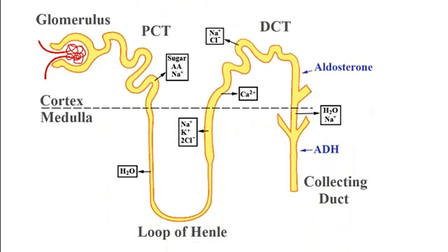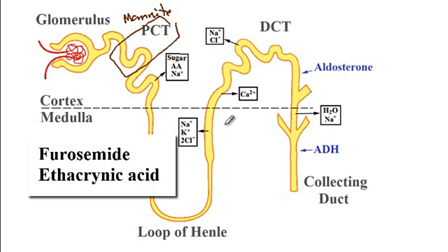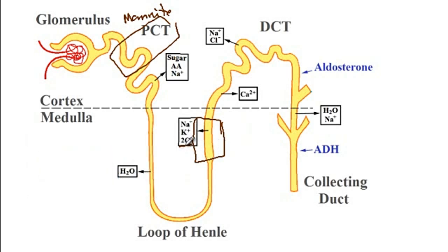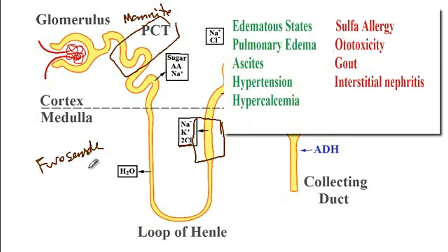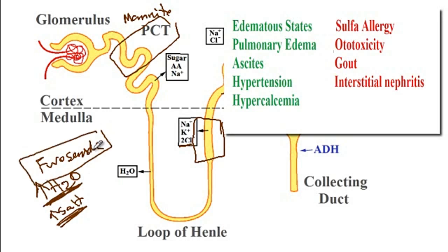Next, different diuretic medications. Mannitol and acetazolamide act on the proximal convoluted tubules — I'll discuss those shortly. Furosemide and etacrynic acid act on the thick ascending loop of Henle by blocking the sodium-potassium-2-chloride co-transporter. These loop diuretics are used for treatment of edematous states, pulmonary edema, and ascites because they enhance more water loss compared to salt loss. They can also be used for hypertension and hypercalcemia, since calcium is also lost with these medications.